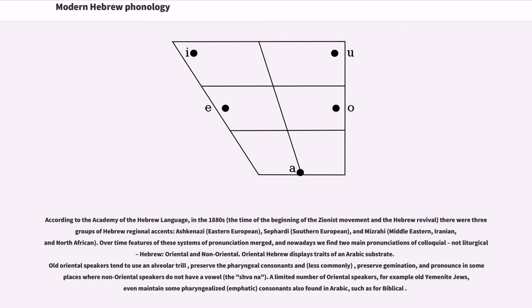Oriental Hebrew displays traits of an Arabic substrate. Old Oriental speakers tend to use an alveolar trill, preserve the pharyngeal consonants and, less commonly, preserve gemination, and pronounce schwa in some places where non-Oriental speakers do not have a vowel.